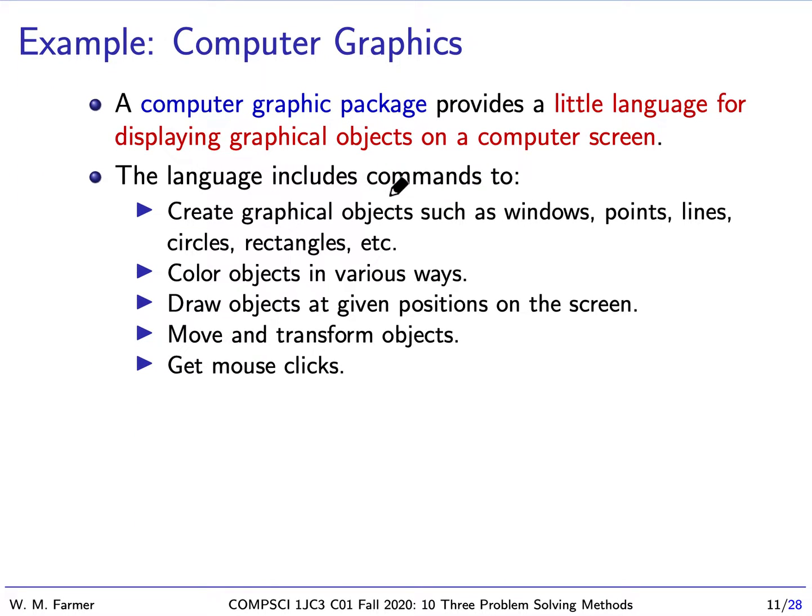My second example is a computer graphics package. It provides a little language for displaying graphical objects on a computer screen. The language includes ways of creating graphical objects like windows, points, lines, circles, rectangles, etc. We can color these objects in various ways, draw these objects at different positions on the screen, move and transform objects, and maybe even collect mouse clicks on objects or particular parts of objects. This package is a little language that allows us to do graphics applications in many different ways using the same components.